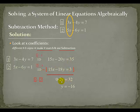Then 35 minus 3 is 32. We can then divide each side by the coefficient of y, which is negative 2. So our answer becomes y is equal to negative 16.